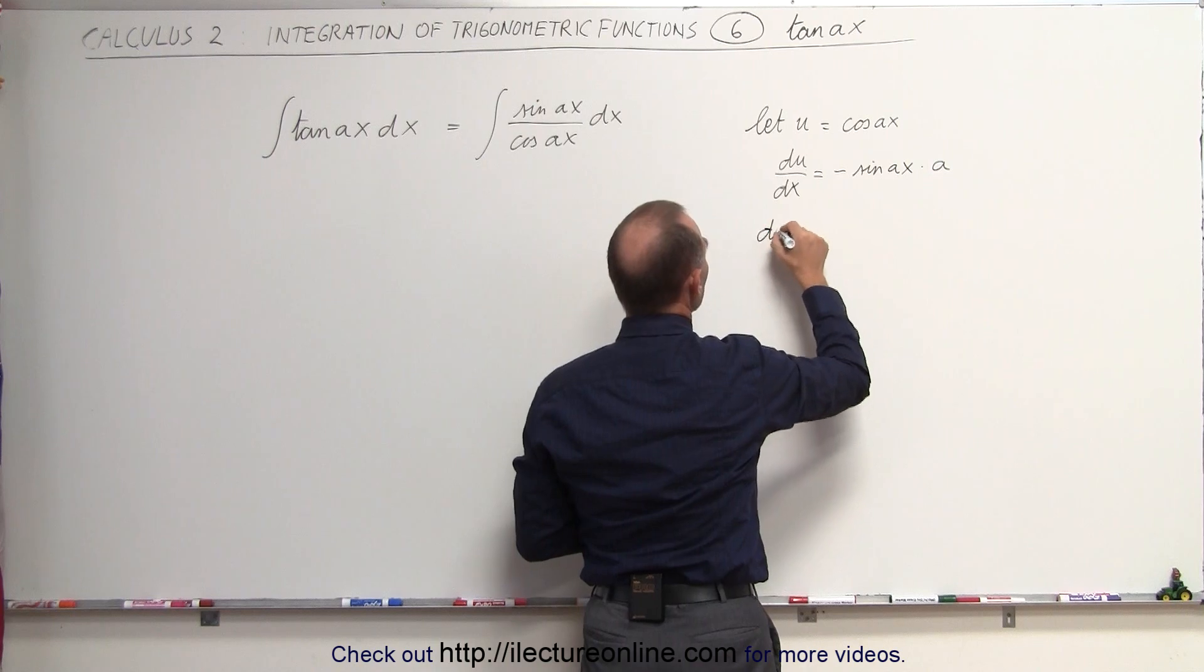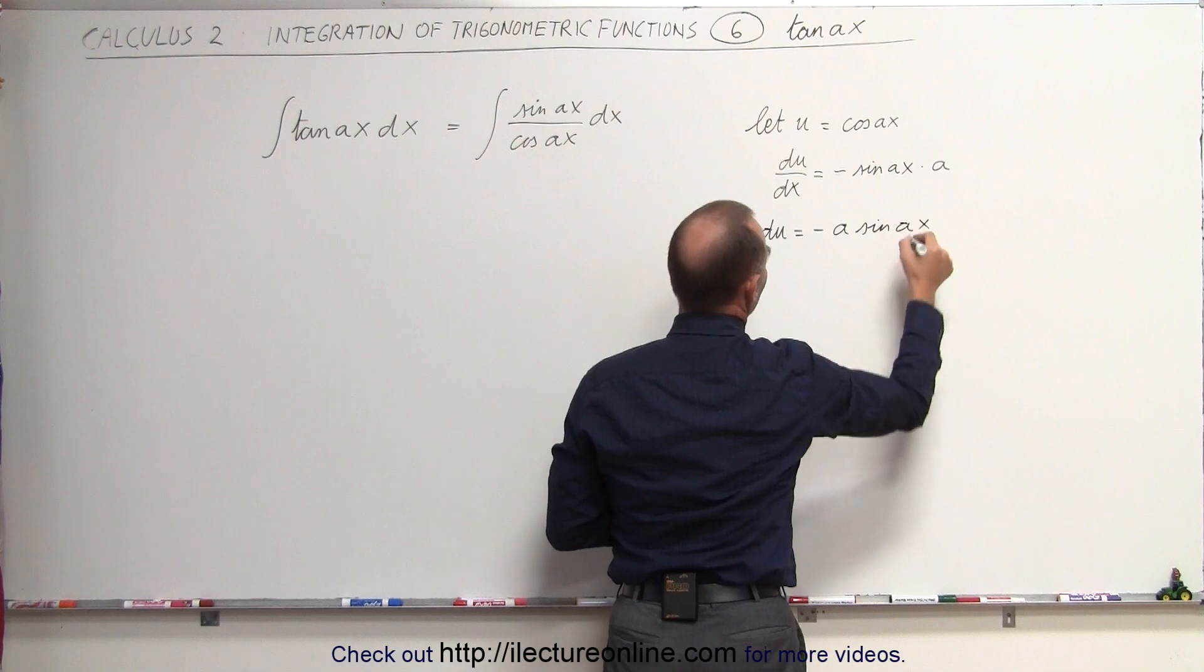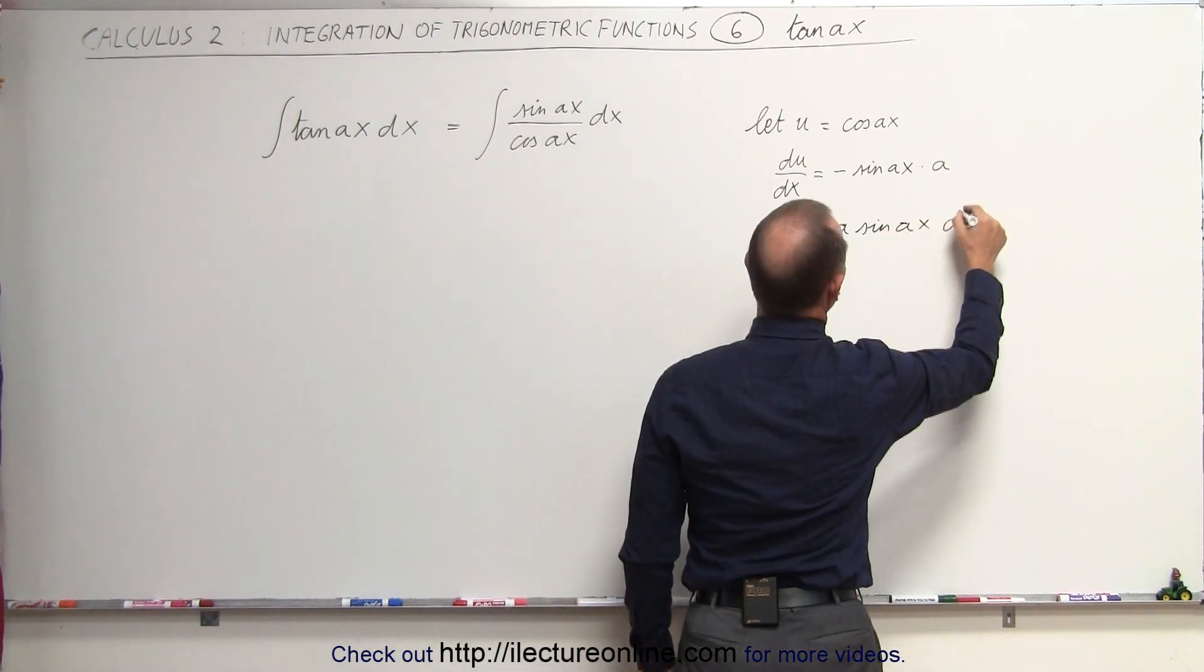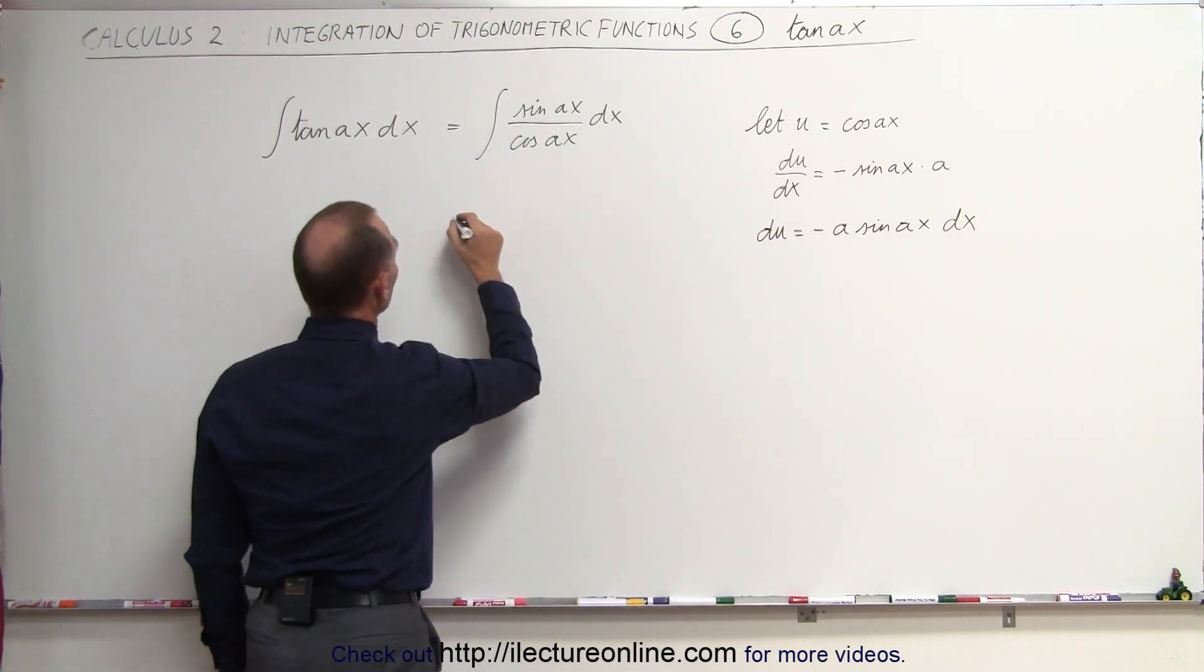In other words, we can write du as being equal to minus A times the sine of Ax times dx. And that's as far as we need to go because now we can come over here and make the substitution.